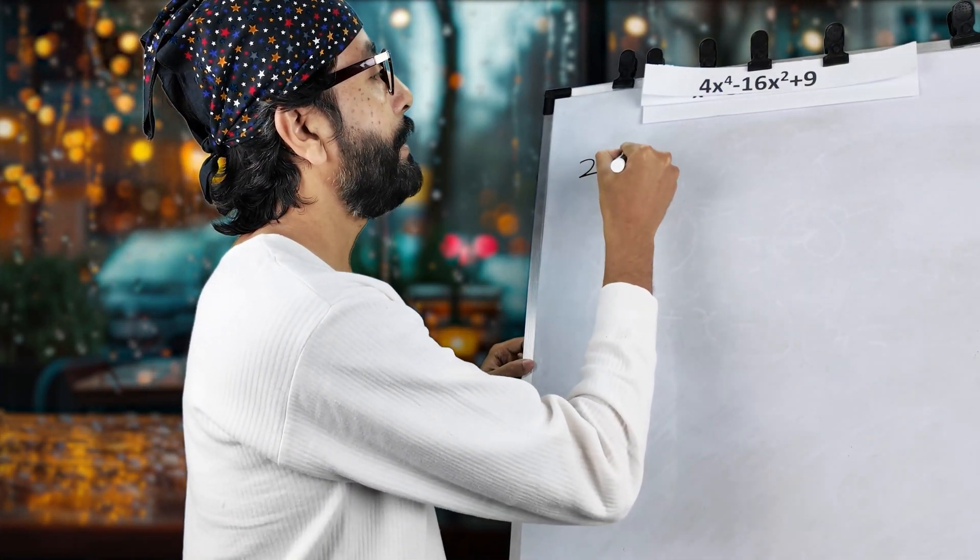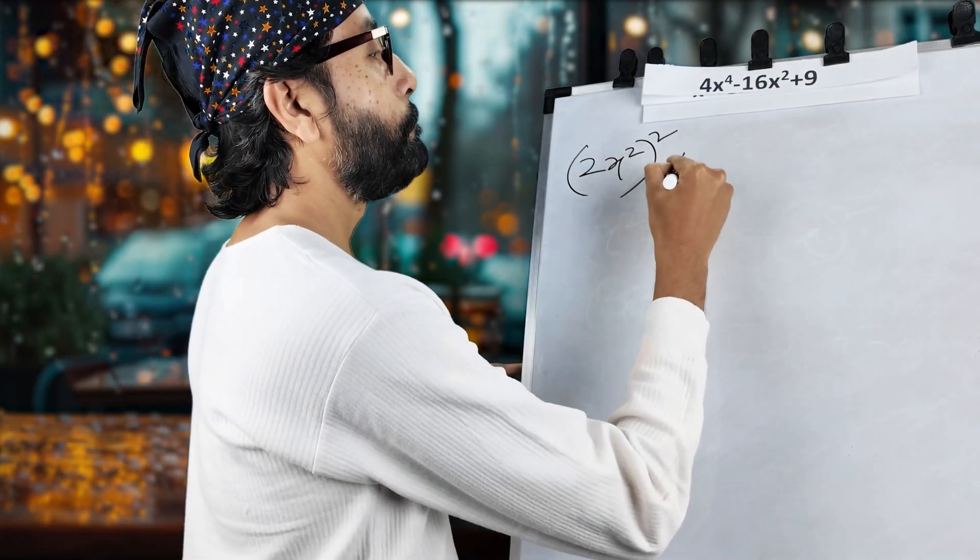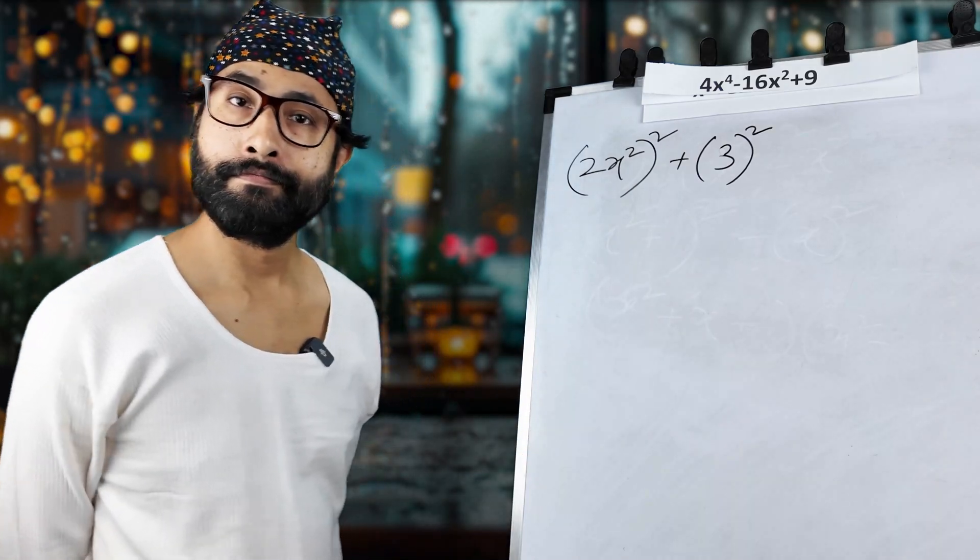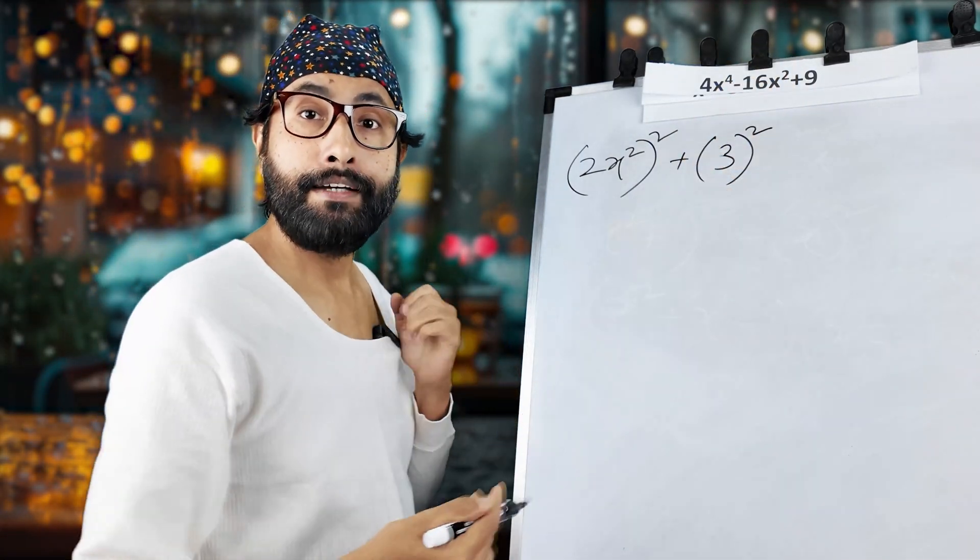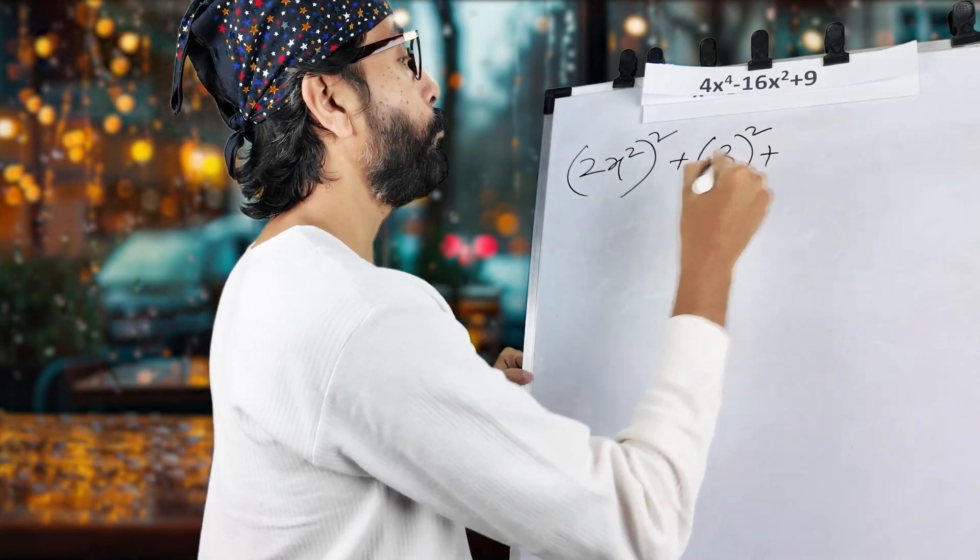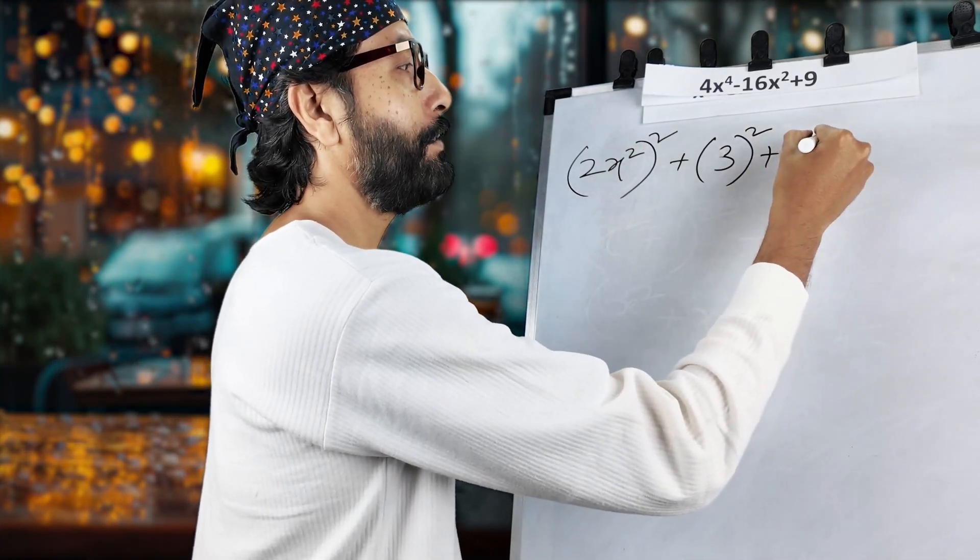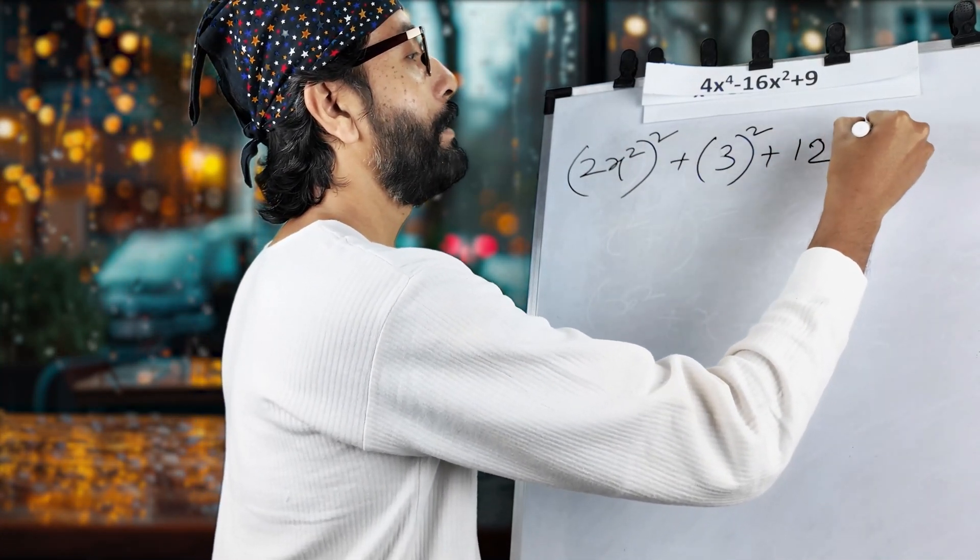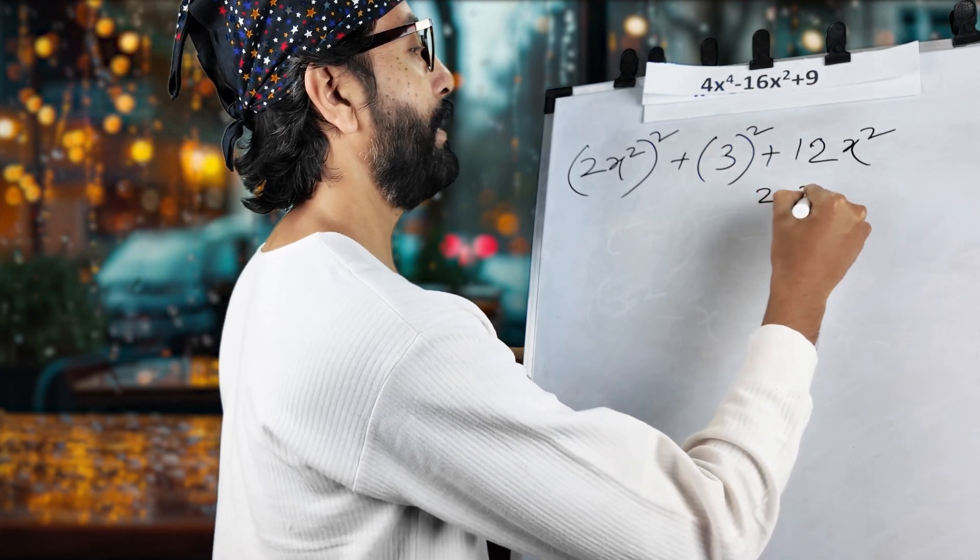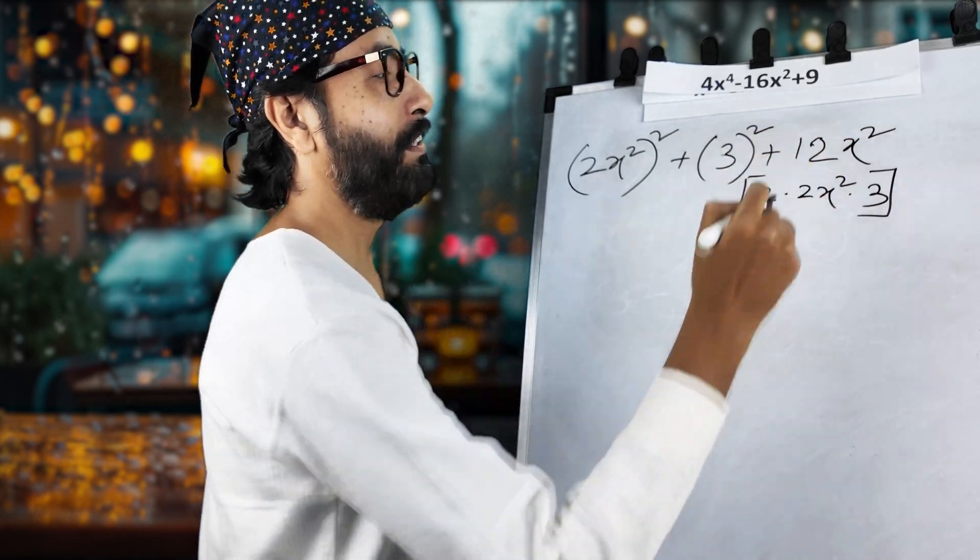How? This is 2x squared whole square. We can write it directly. Right? This time. And this is 3 squared. Right? What about this? We will come to this. But before that, we have to find 2ab. This is initial a. This is initial b. So, we have to find the initial 2ab. That is 2 into 3 is 6. 6 into 2 is 12. So, 12 directly. I'm just writing it 12x squared. No? Simple thing. 2abc. 2 into 2x squared into 3. This is 12, my friend. You get it?